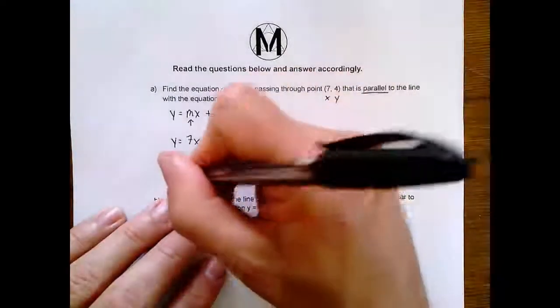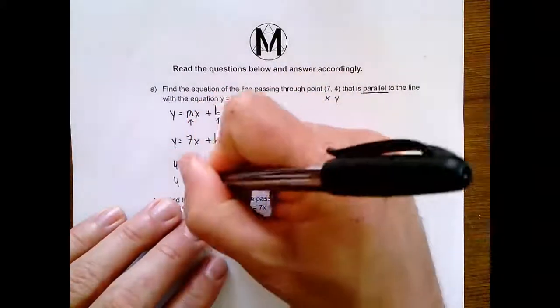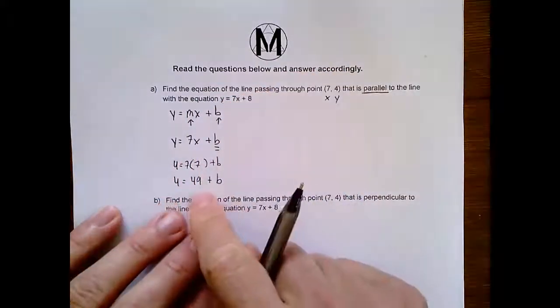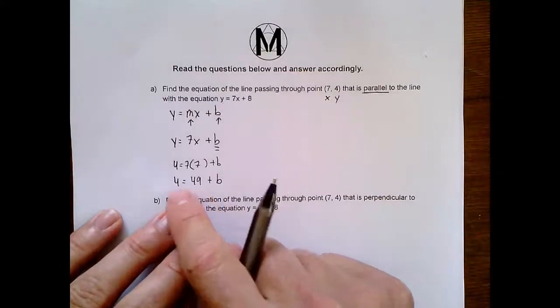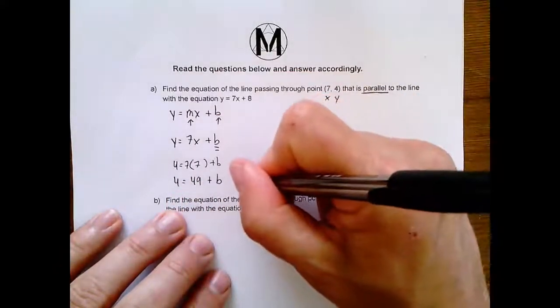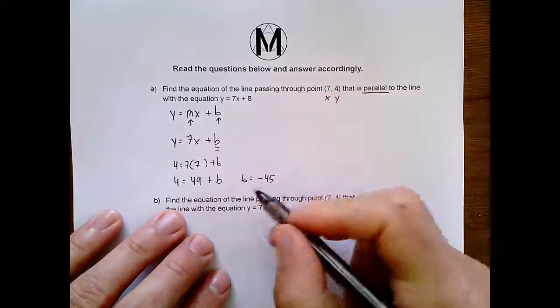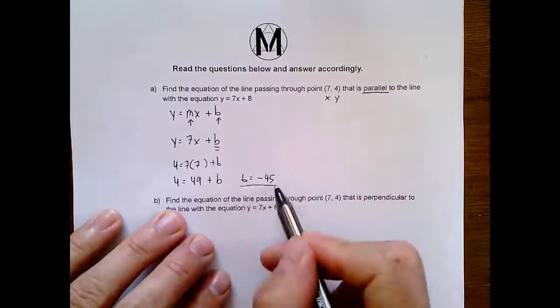Okay, 7 times 7 is 49. So I get 4 equals 49 plus b. And now I subtract 49 from both sides. So I'm going to find out that b equals negative 45.